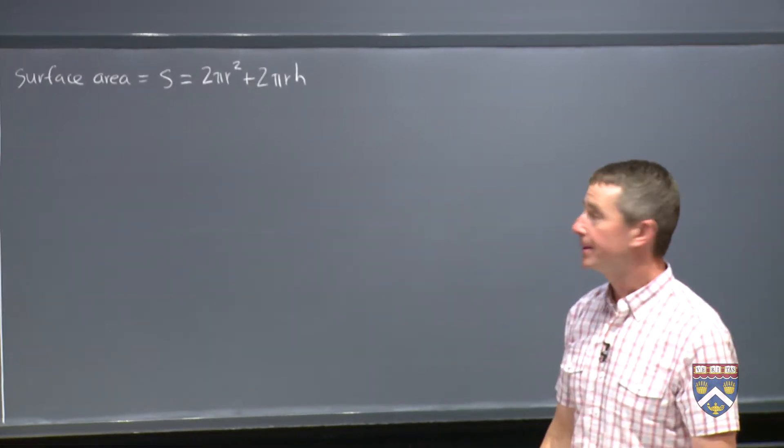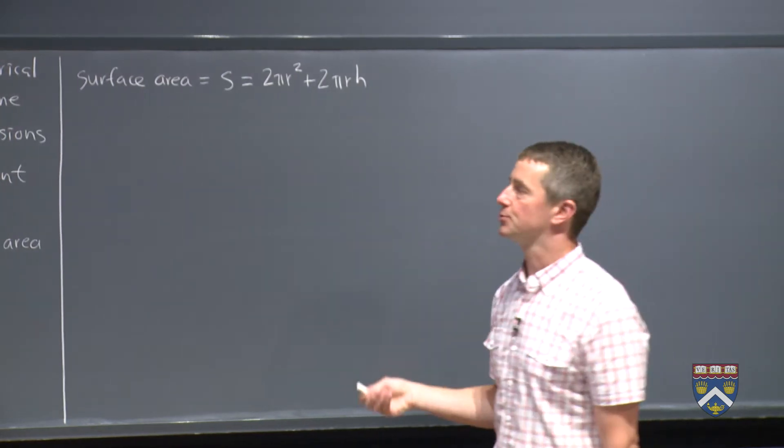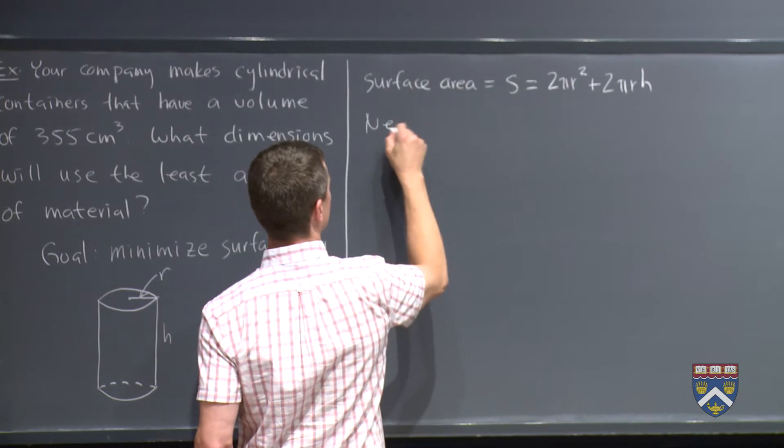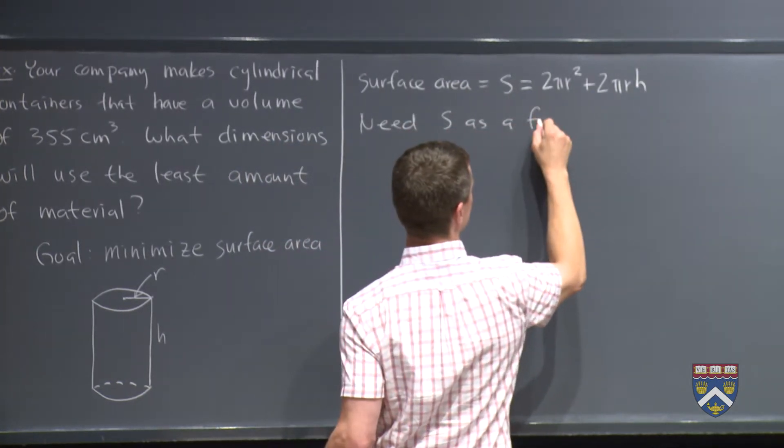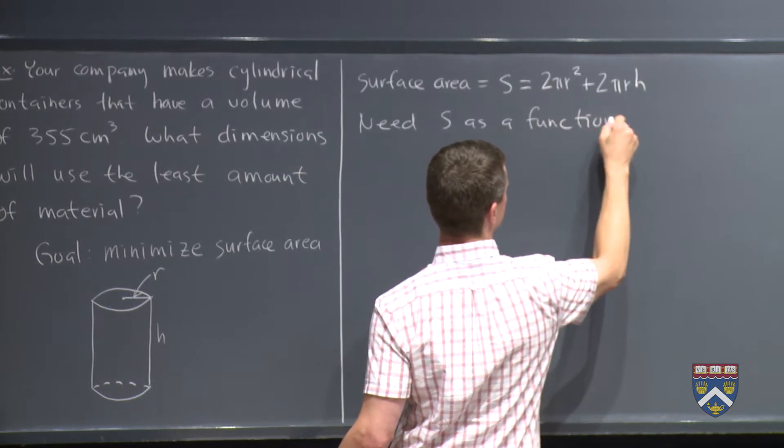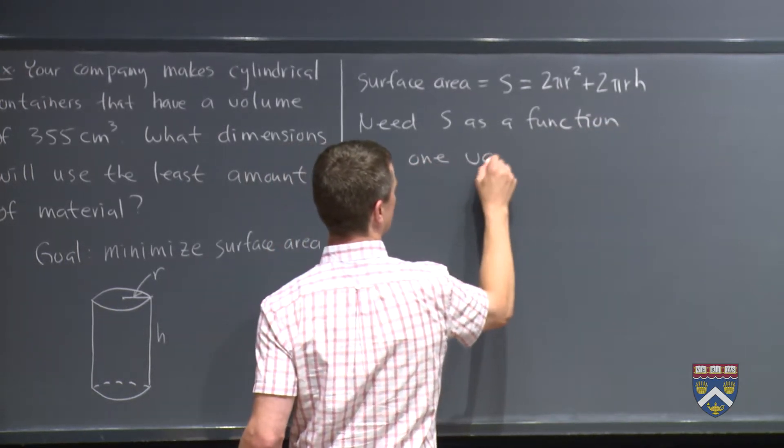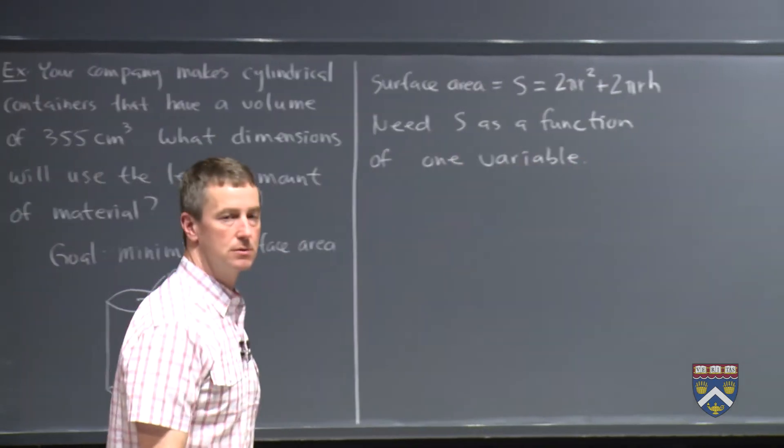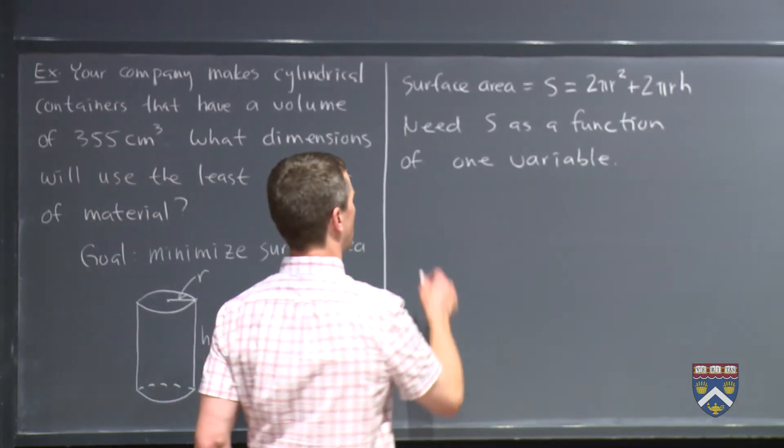What's the trouble? Same trouble as in the last problem. We've got a function of two variables. We can't do that. We need S as a function of one variable. So there must be some other information, some other constraint that will let us solve for either r or h. Solve for r in terms of h or h in terms of r. So what else do we know?